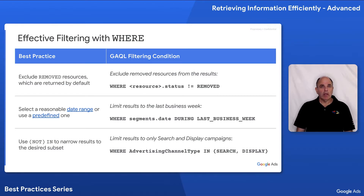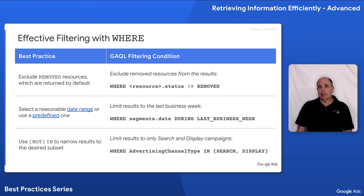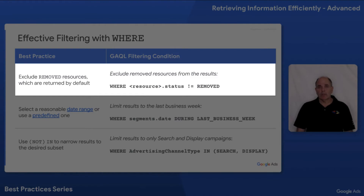Now let's talk about how to make your queries more efficient. The most obvious way is to use the WHERE clause to retrieve only the information you actually require. By default, all resources come back irrespective of status, so the first obvious optimization is to ensure that you only retrieve resources that are active and do not have a removed status.